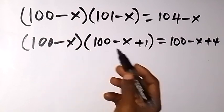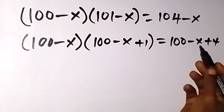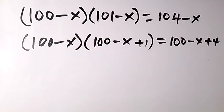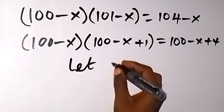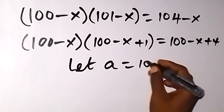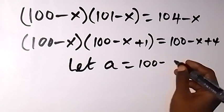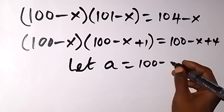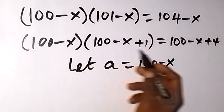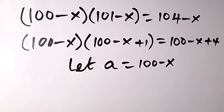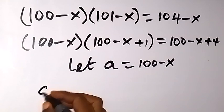We have (100 + 4) giving us 104. Now let's use the letter a. Let a equal 100 minus x, and in the next step we can write this in terms of a: a into bracket (a + 1).